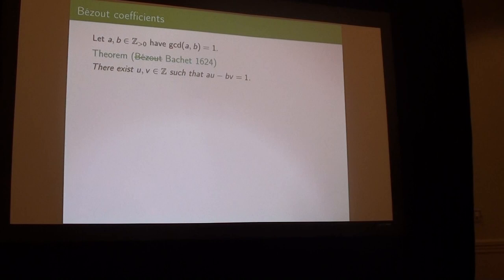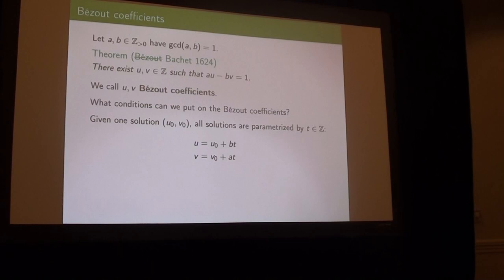Does everybody know Bézout's lemma? You take two integers A and B, which I'll take to be positive, that are relatively prime. There's a theorem attributed to Bézout, but actually goes back to Bachet in 1624. You can always tell who didn't prove a theorem by who it's named after. The statement is that you can find other integers U and V with the property that AU minus BV equals 1. We call these the Bézout coefficients.